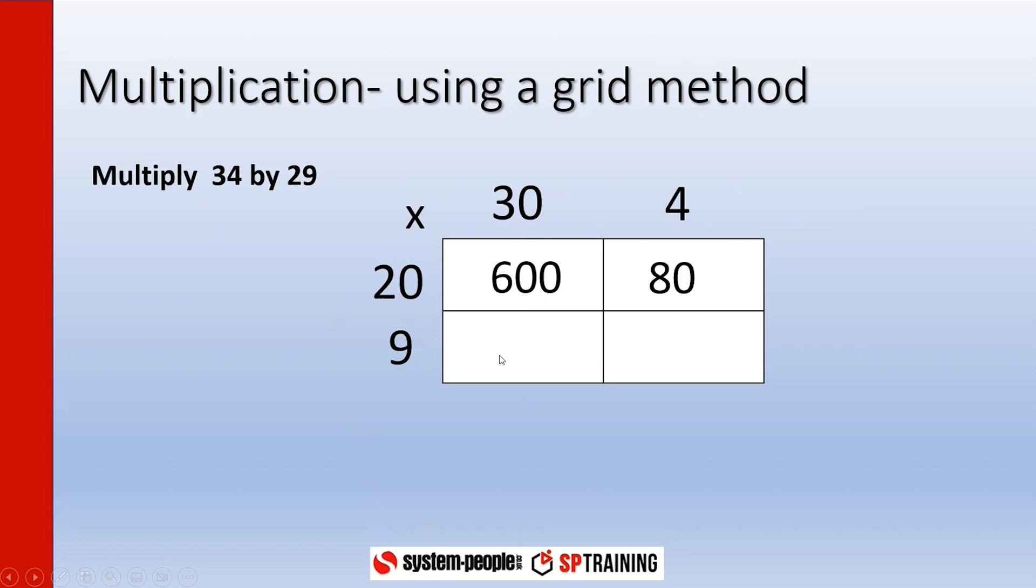And exactly the same with this bit: 9 times 3 is 27 and we've got a zero there so that'd be 270. And then we'll work out 9 times 4 which is 36.